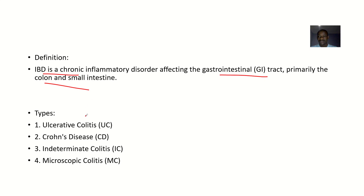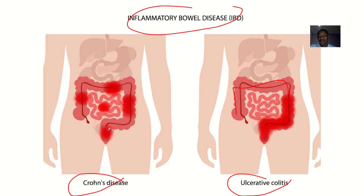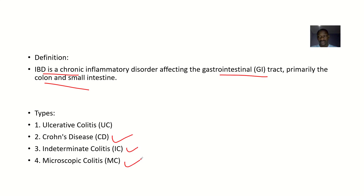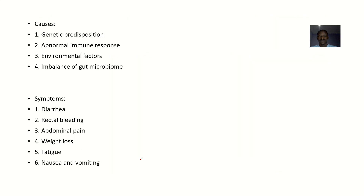The types of inflammatory bowel disease include: ulcerative colitis, which is inflammation of the large intestine that has been there for a very long time leading to the formation of ulcers — that's why they say ulcerative colitis. It could be Crohn's disease, indeterminate colitis, or microscopic colitis.